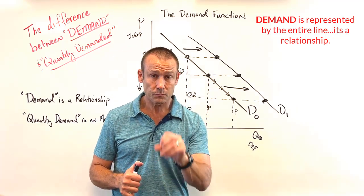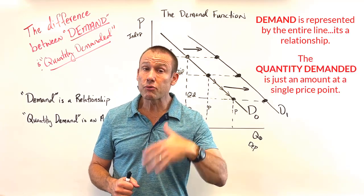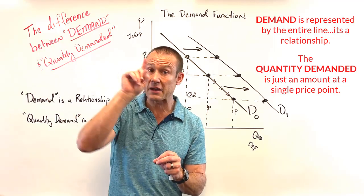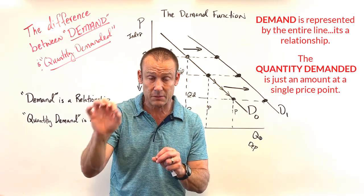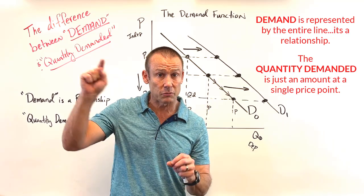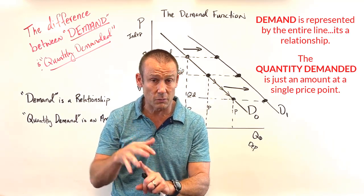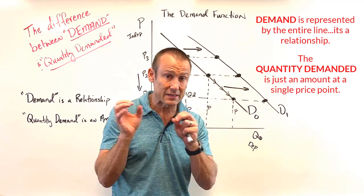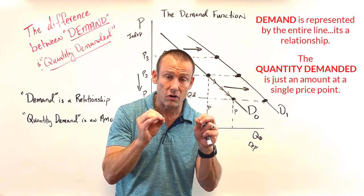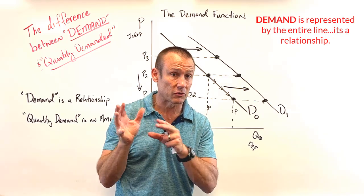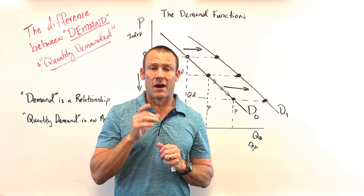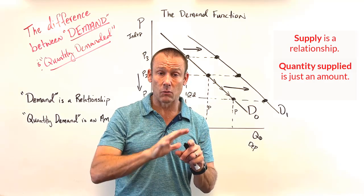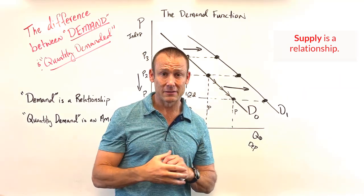To summarize: demand is a relationship — it's a function showing the relationship between price and quantity demanded. Quantity demanded is just an amount. If you get a price change, quantity demanded changes but demand itself does not. If an exogenous variable that affects the P-to-QD relationship changes — such as consumer taste, income, or the other determinants — then demand itself changes and the entire curve shifts. The same logic applies to supply: supply is a function and quantity supplied is an amount.